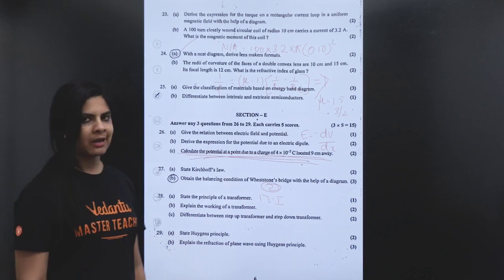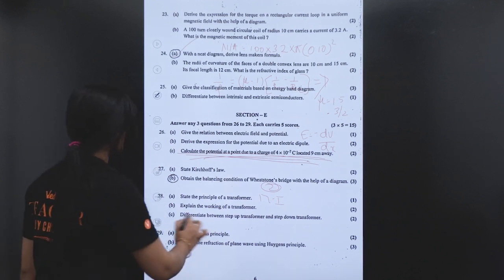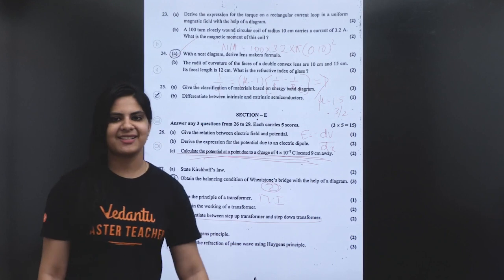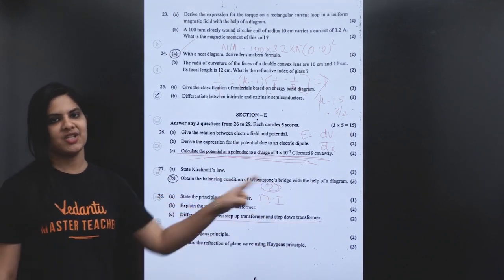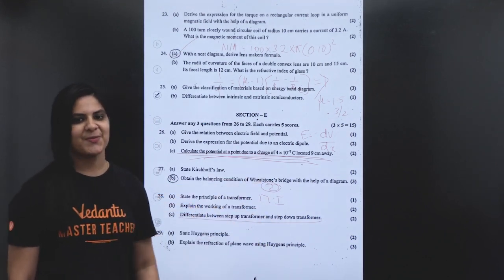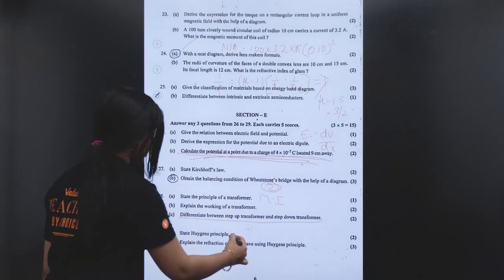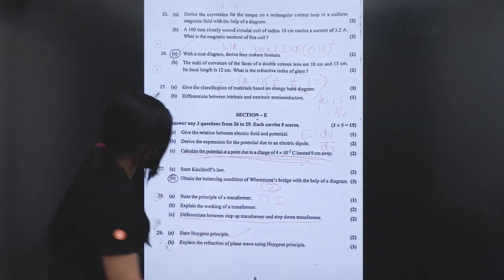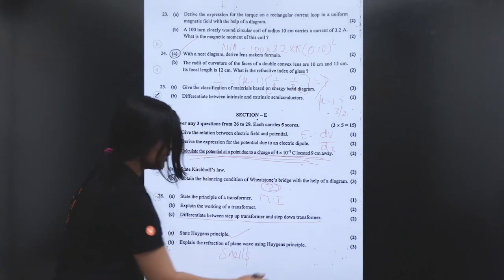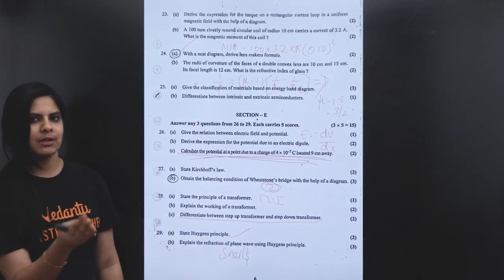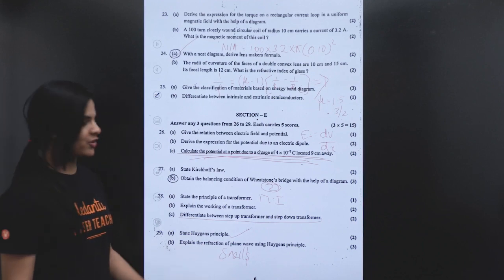Explain the working of a transformer — let's put that in the diagram. Differentiate between step-up transformers and step-down transformers. The state high-tech principle is very simple. Explain with fractions. This is the last question and its derivation.